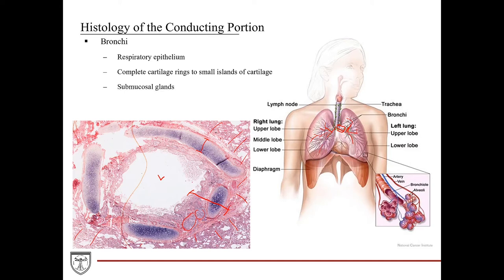Submucosal glands are identified in the bronchi, and smooth muscle starts to play a more prominent role in structural support and airflow regulation, especially as the bronchi become smaller. Lastly, there is the BALT — bronchus-associated lymphoid tissue — which is the MALT (mucosa-associated lymphoid tissue) found within the bronchial wall. It's not uncommon to see these aggregates of busy-looking immune cells within the wall of the bronchi, and this is one of the key characteristics of bronchial histology.